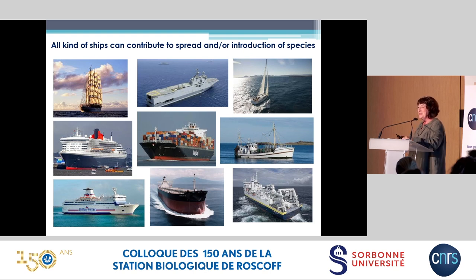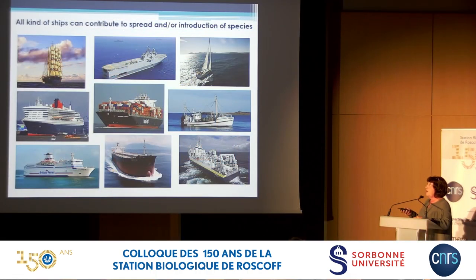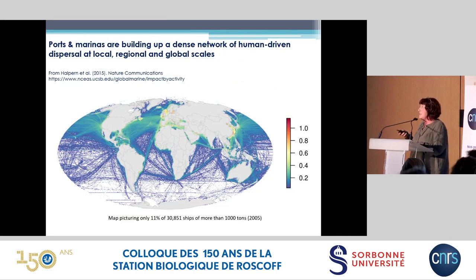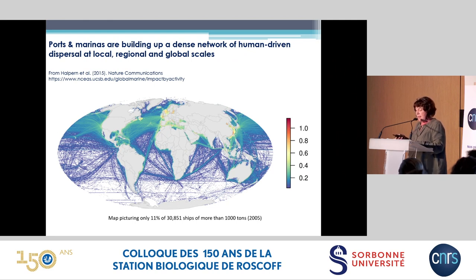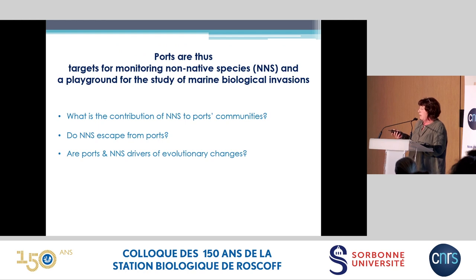For long-distance dispersal, cargo ships are the main vector — we had a nice example with the transmissible cancer presented yesterday by Nicola. Military ships and research vessels also play a role. At more regional or local scale, ferries and leisure boating play a major role; leisure boating has been neglected for years but is probably the most important vector for spread of introduced species. All these ports and marinas build a very dense network of human-driven dispersal at local, regional, and global scales.